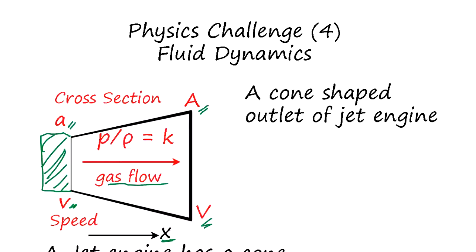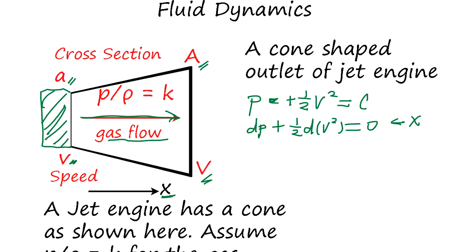We established Bernoulli's equation. So across this flow, it's going to be P plus 1/2 ρV² equals C. So dP plus 1/2 d(ρV²) equals 0. This is derivative with respect to X. Now since dP equals minus 1/2 ρd(V²).